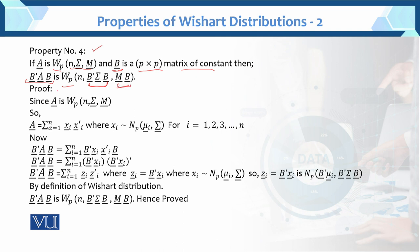Since A follows the Wishart distribution, and these Wishart constants are non-central. So A equals the sum over i from 1 to N of Xi Xi'. Xi follows the multivariate normal distribution with mean vector μ and variance-covariance matrix Σ.